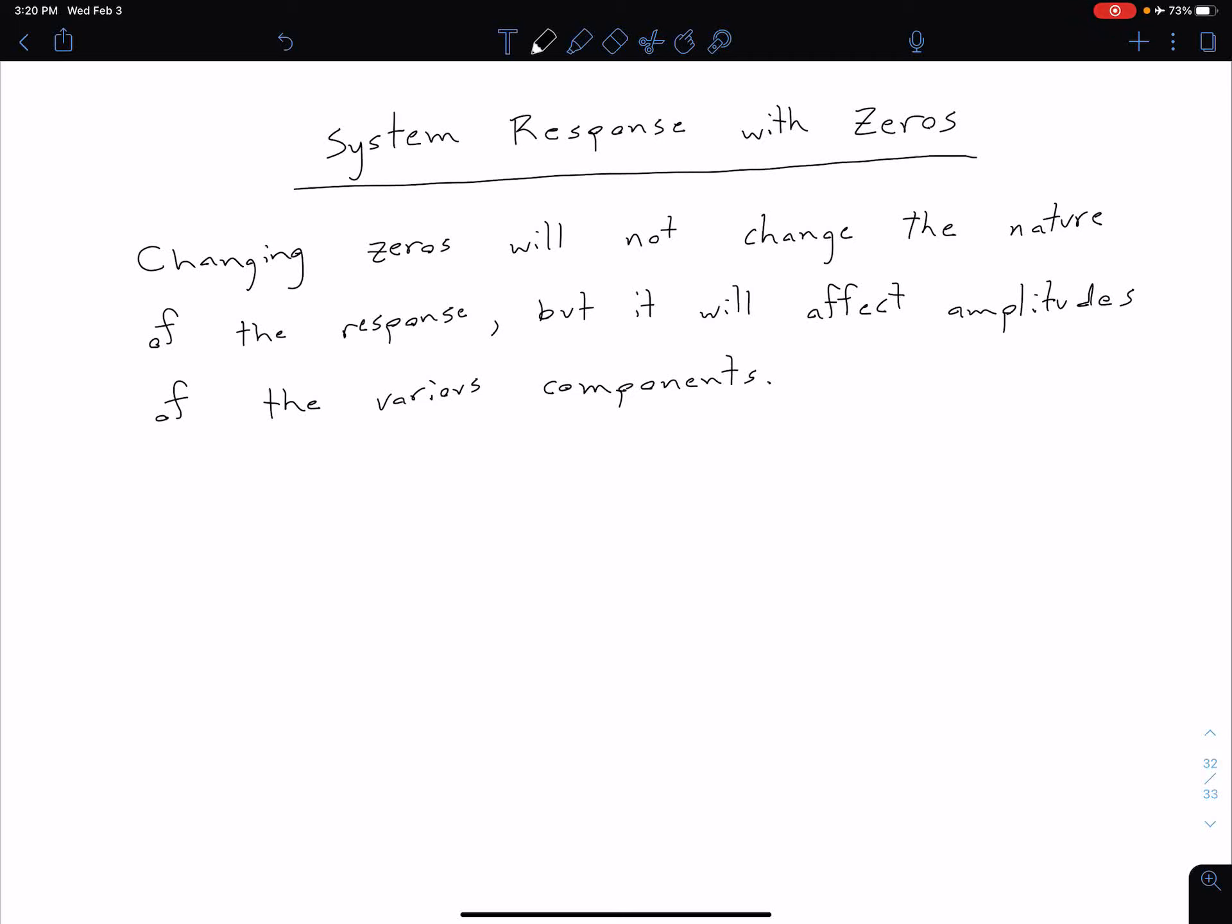We're now going to look at how the system response changes as we add zeros to the system. In general, as we've said before, changing zeros is not going to change the nature or the form of our response. So if we have an underdamped response before we have any zeros, we're still going to have an underdamped response after we add zeros.